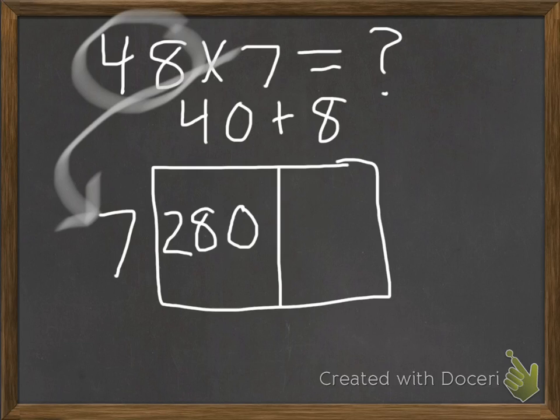Now we look at our 8 times 7, or 7 times 8, and that is 56. If you don't know that math fact, you could go 7 times 7 is 49 and add another 7 on to that, or use some of the tricks we've used in class, counting by multiples of 7 or such. So we'll put our 56 here.